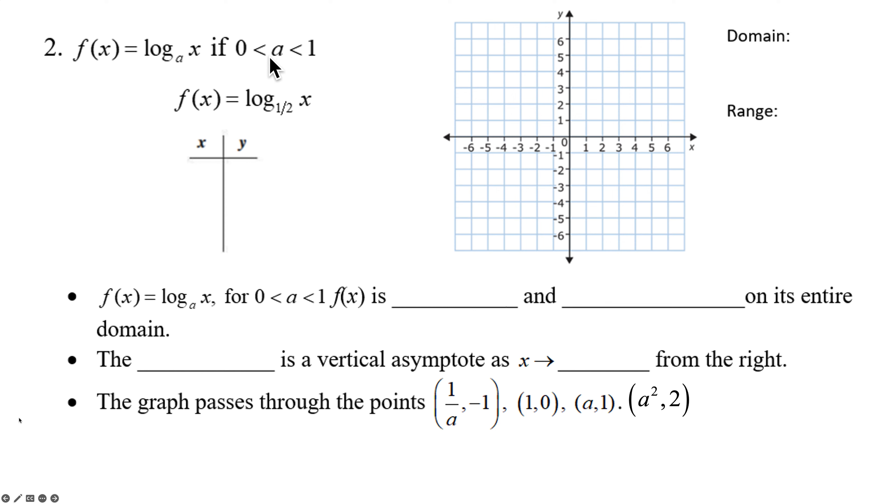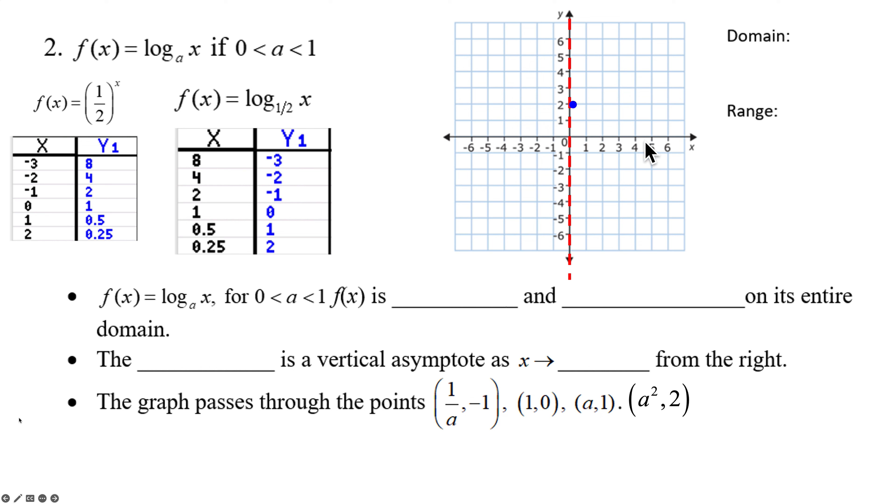If we look at a base between 0 and 1, log of base 1/2 of x. Again, don't recreate the wheel. We used this table earlier. Switch them around. 8, negative 3, 4, negative 2, 2, negative 1, 1, 0, 1/2, 1, 1/4, 2. There's my vertical asymptote. Now we start plotting our points. There's 0.25, 2, 0.5, 1, 1, 0, 2, negative 1, 4, negative 2, 8, negative 3. And it appears that this graph has flipped over the x-axis compared to log base 2 of x. So now when we're between 0 and 1, we are decreasing and continuous. Domain and range, no change. Our y-axis is still our vertical asymptote as x approaches 0 from the right. And again, you can see our points are switched.